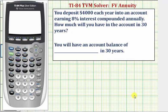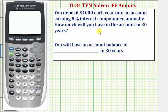Welcome to an example on how to determine the future value of an annuity using the TI-84 TVM solver. You deposit $4,000 each year into an account earning 8% interest compounded annually. How much will you have in the account in 30 years?